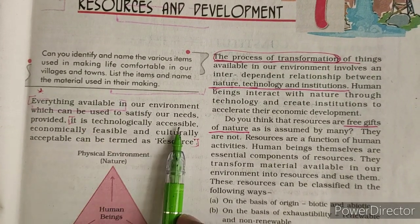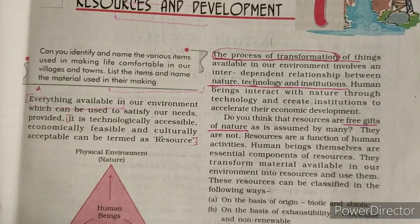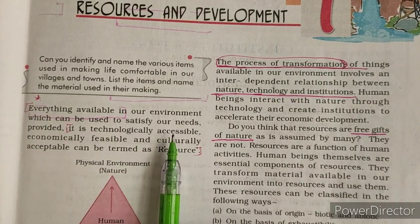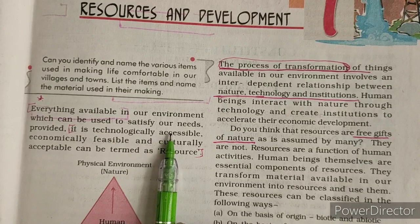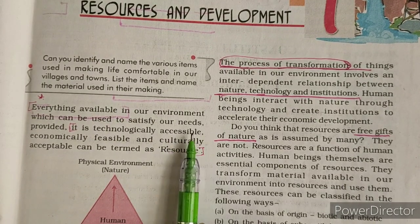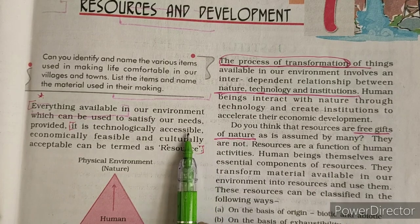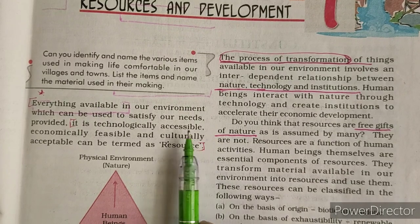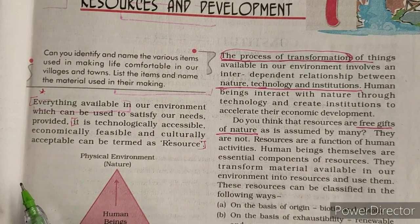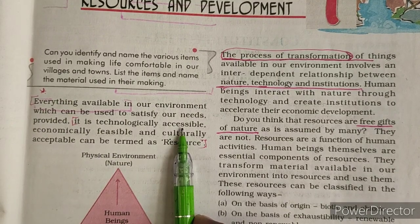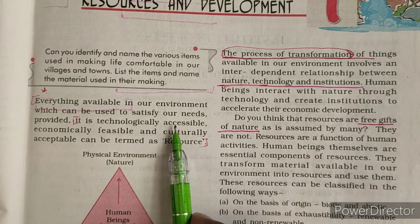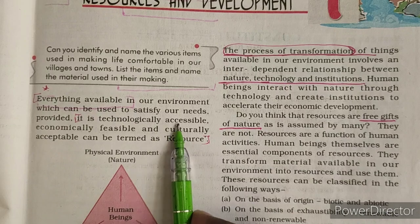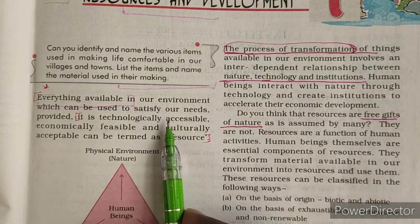These resources should be technologically accessible, economically feasible, and culturally acceptable. Technologically accessible means the resource should be reachable through technology. Suppose we are extracting gold: the cost of gold is 5,000 rupees but the extraction cost is 10,000 rupees. So technologically that resource is not accessible.